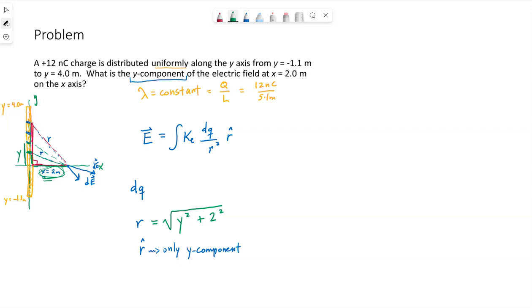That means we want to write dq in terms of dy. That's going to be lambda dy. And that's because we can always say lambda is dq, the charge on any one little piece, divided by the length of that little piece. If our charge distribution is on the y-axis, we just call the length of that little piece dy. Alright. So dy is what is going to tell our integration that y is our variable.